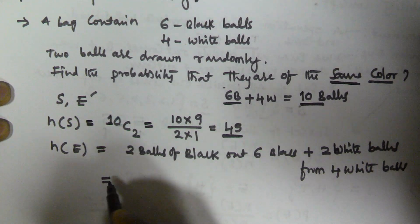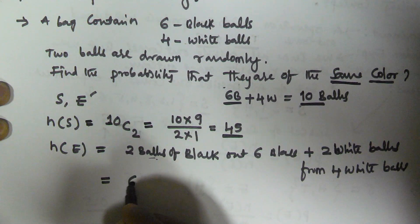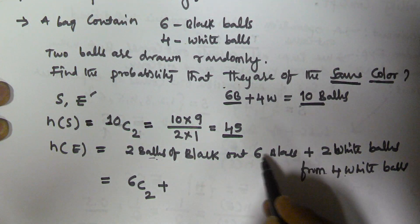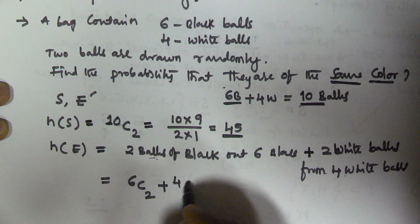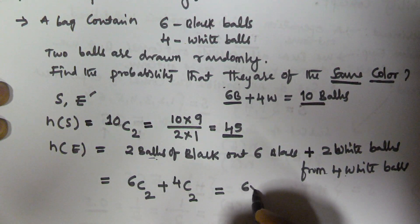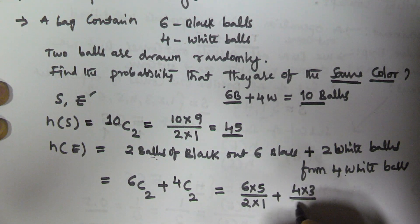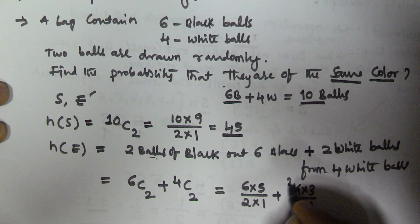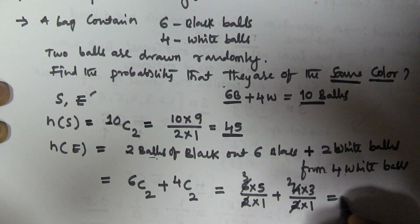The selection of 2 black balls out of 6 black balls is 6C2, plus selecting 2 white balls out of 4 white balls is 4C2. Since it is an 'or' condition, we use addition. So n(E) = 6C2 + 4C2 = (6×5)/(2×1) + (4×3)/(2×1) = 15 + 6 = 21.